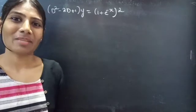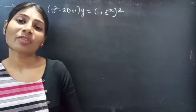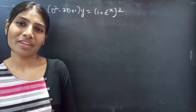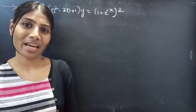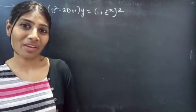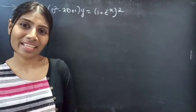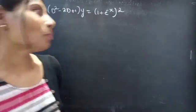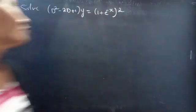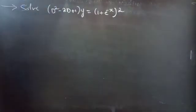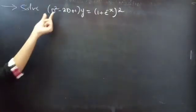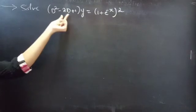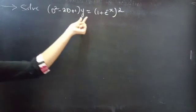Hello everyone, this is Zia Kalpana here. In this video we are going to solve a higher order linear differential equation. Let's get going. Problem: solve (D² - 2D + 1)y equals 1 plus e^(-x) whole square.